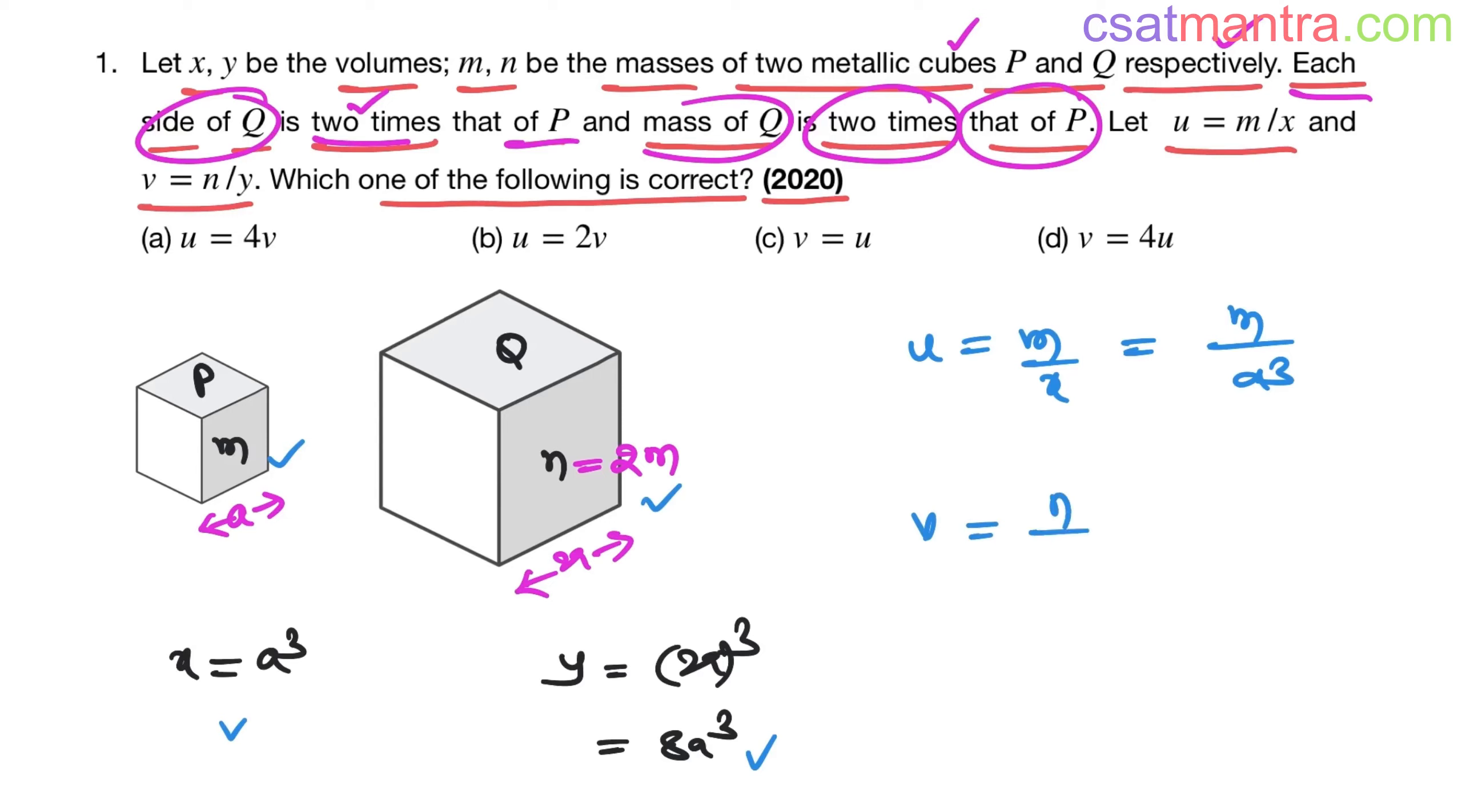v is equal to n by y. n is 2m, and y is 8a³, so v = 2m/8a³ = m/4a³. Now if you see, m/a³ is u, so v = u/4. Therefore u = 4v, so our answer is option A.